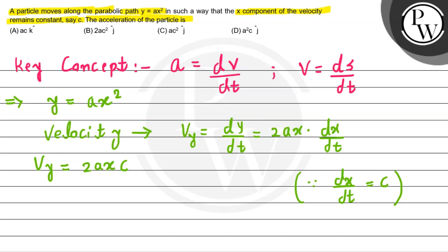Now we need to find acceleration. For acceleration, we will differentiate v_y with respect to t. So we get the acceleration in y direction: a_y equals dv_y/dt, which equals 2ac times dx/dt. Again, dx/dt we consider as c as per the question. So this equals 2ac times c, which simplifies to 2ac².